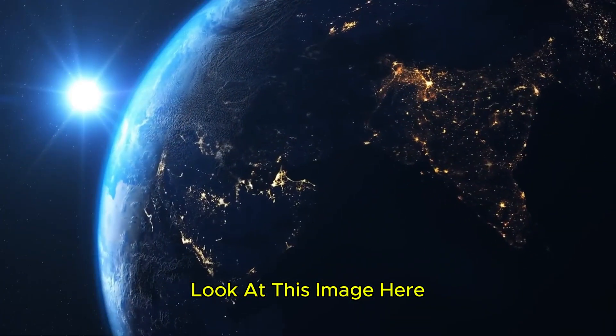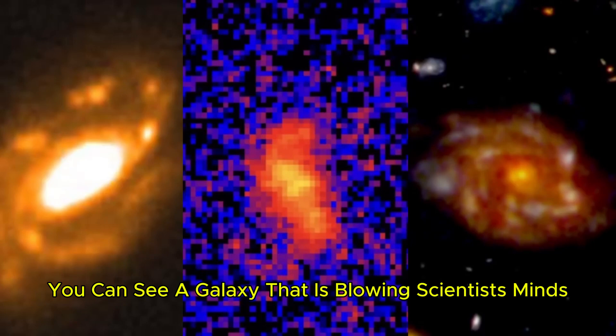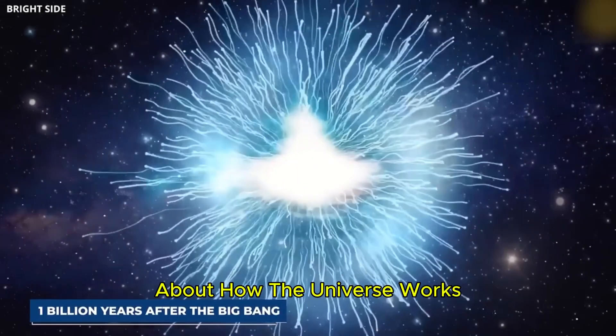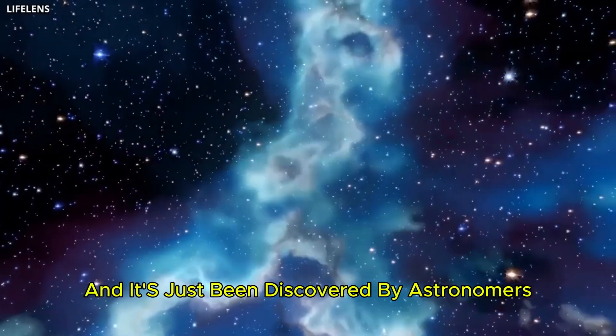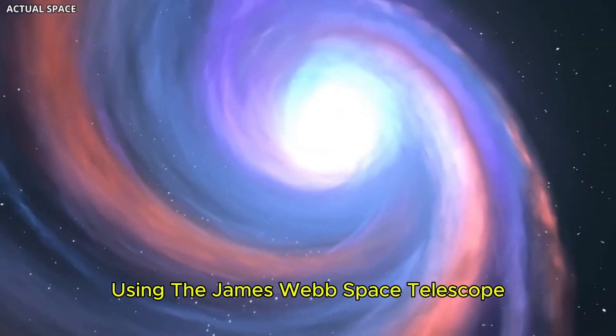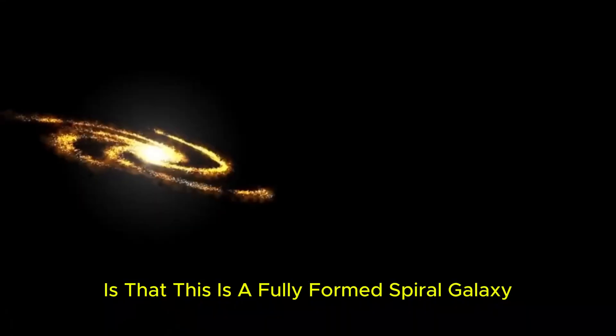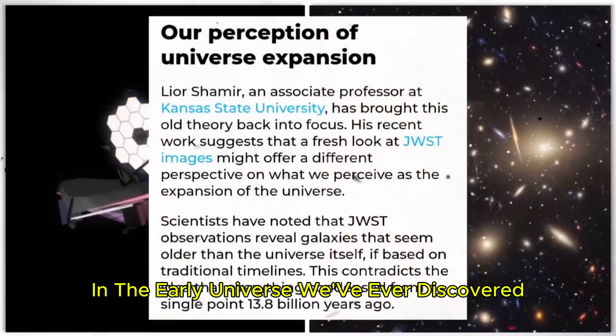Look at this image here. You can see a galaxy that is blowing scientists' minds. Seriously, it's shaking up everything we thought we knew about how the universe works. It's called Zulong, and it's just been discovered by astronomers using the James Webb Space Telescope. What's crazy is that this is a fully formed spiral galaxy, and it's the oldest spiral galaxy in the early universe we've ever discovered.